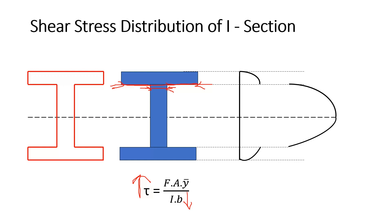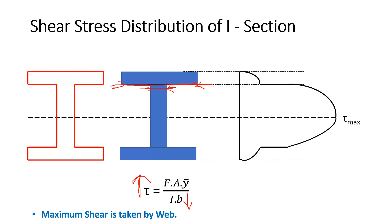From flange to web, the shear stress increases. You can clearly see that the shear stress is maximum at the web — tau max. So the maximum shear in any I-section is taken by the web, and very little shear is taken by the flange portion.